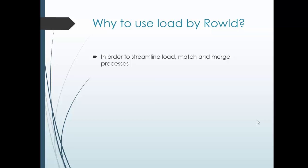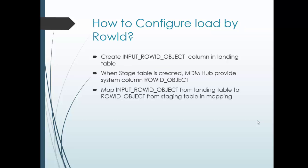We can use the other way — the preserved unique key from the source — to load the data, but in order to streamline the load, match, and merge process, we should go with Load by Row ID. The row ID object is introduced by Informatica MDM and it definitely helps for several processes, including match and merge. So it is always preferred to load by row ID.